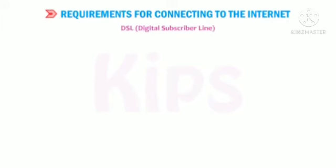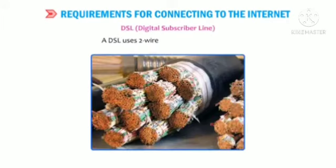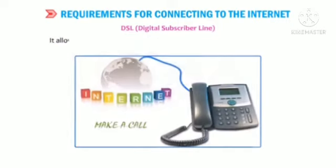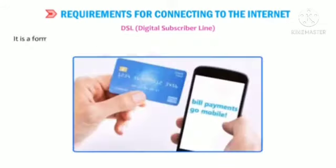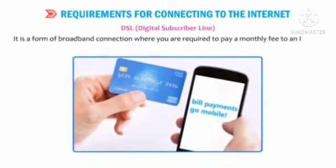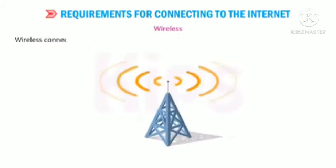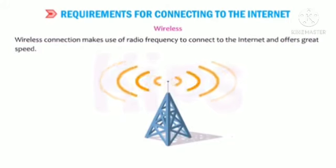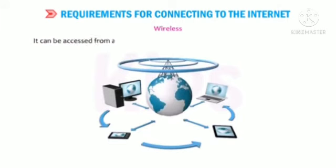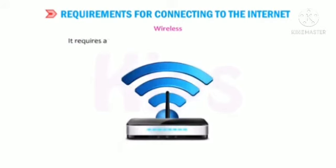DSL (Digital Subscriber Line): A DSL uses two-wire copper telephone lines. It allows you to make calls even when you are connected to the internet. It is a form of broadband connection where you are required to pay a monthly fee to an ISP for accessing the internet. Wireless connection makes use of radio frequency to connect to the internet and offers great speed. It can be accessed from any location within the network coverage area and requires a Wi-Fi modem connected to your computer.